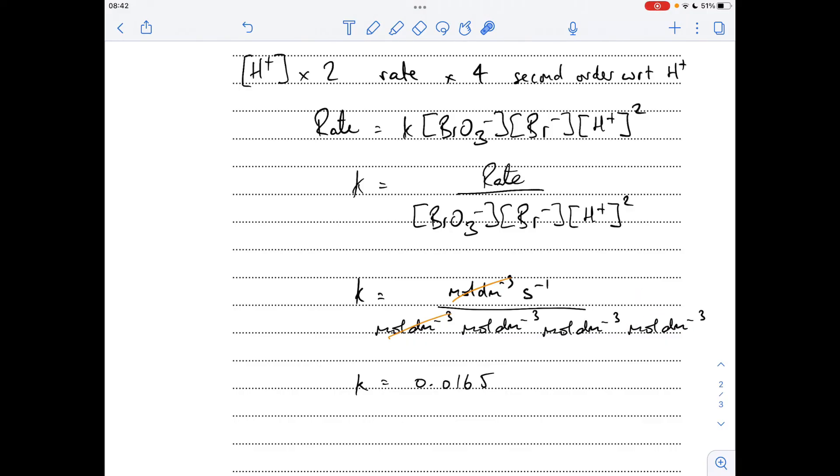Just to quickly explain: dm to the minus three times dm to the minus three times dm to the minus three, when you take it up to the top becomes dm to the nine. Moles times moles times moles—moles cubed—so take it up to the top, it becomes moles to the minus three. S to the minus one was already up there, so that doesn't change.